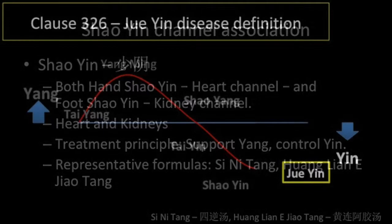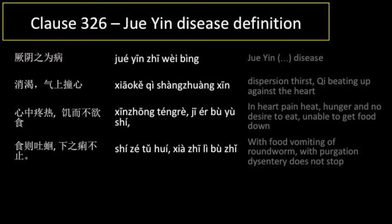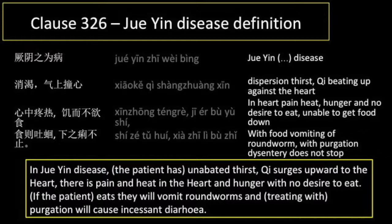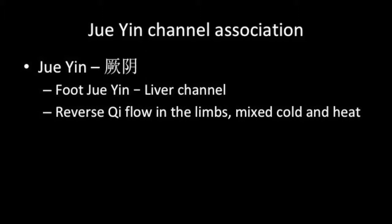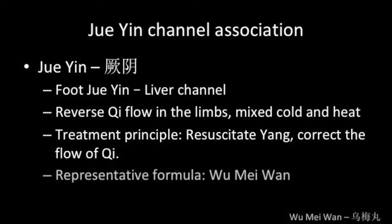Clause 326, Jueyin channel disease definition: Jueyin zhi wei bing, xiao ke, qi shang zhuang xin, xin zhong tong re, ji er bu yu shi. Shi ze tu hui, xia zhi li bu zhi. In Jueyin disease, the patient has unabated thirst, qi surges upward to the heart, there is pain and heat in the heart, and hunger with no desire to eat. If the patient eats, they will vomit roundworms, and treating with purgation will cause incessant diarrhea. At this stage the foot Jueyin or liver channel is considered. The liver governs the free flow of qi, and at this extreme stage there is reverse qi flow in the limbs resulting in cold extremities. Yin and yang produce mixed cold and heat symptoms. The treatment principle is to resuscitate yang and correct the flow of qi, and the representative formula is Wu Mei Wan.